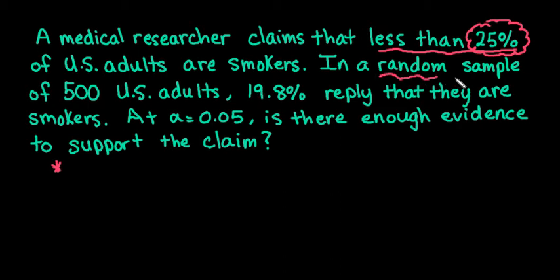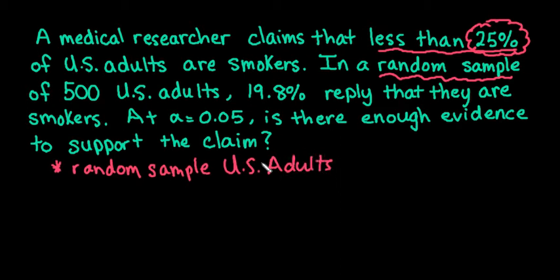So the conditions that we have for the 1 proportion z test is that we do have to have a random sample. It's important that we used a random sample to control bias. And it does say that they are U.S. adults. It wouldn't help to get it from somewhere else in the world, because that would not go with our claim.